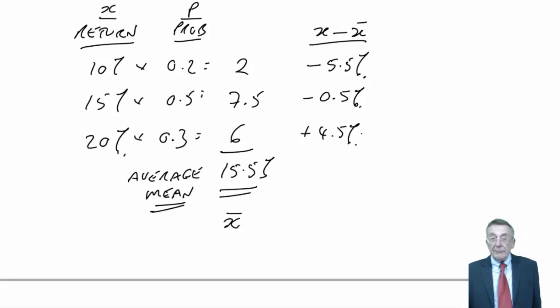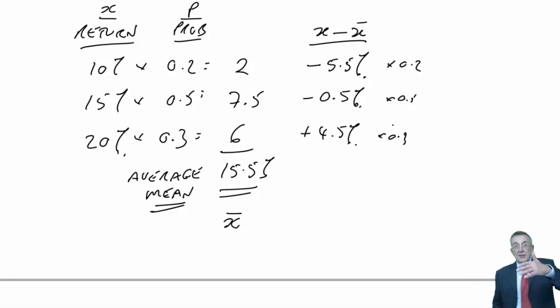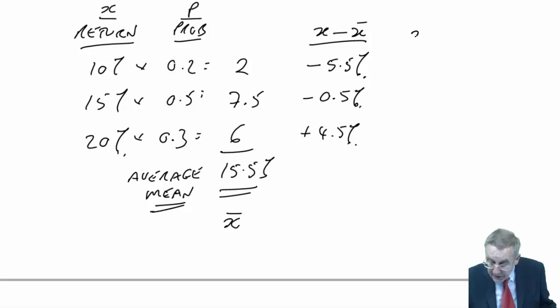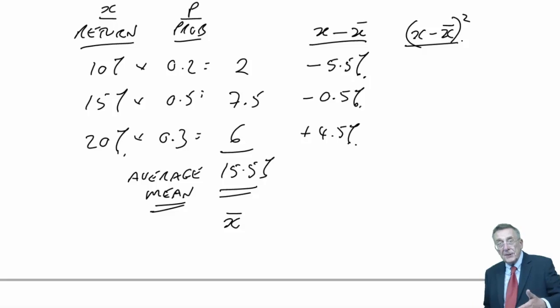There's the difference from the average. The only problem is, if you took the average of those, if you multiply by the probabilities, some are below, some are above, you'd actually end up getting 0, which would be meaningless. So what we do, to avoid the sign problem, we square those differences. If you square them, a minus times a minus becomes a plus, so they all become positive. Then we take a weighted average, multiply by the probability and add up.